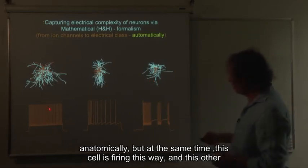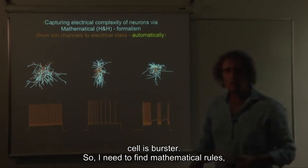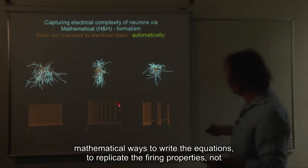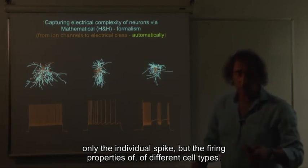But at the same time, this cell is firing this way, and this other cell fires like this. You can see that it is accommodating, and this cell is burster. So I need to find mathematical rules, mathematical ways to write the equations to replicate the firing properties, not only the individual spike, but the firing properties of different cell types.